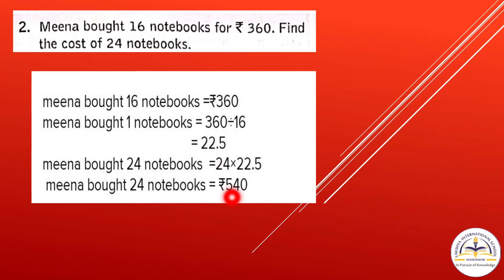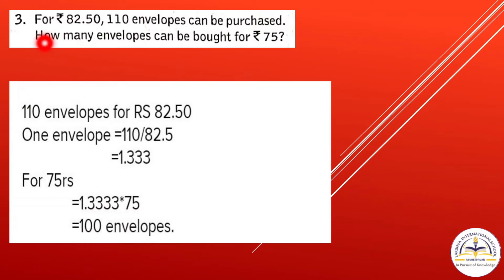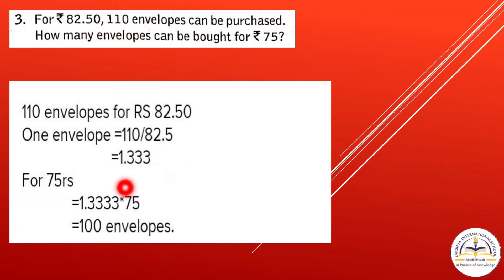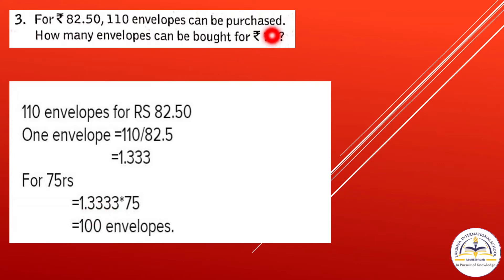Question 3: For rupees 82.50, 110 envelopes can be purchased. How many envelopes can be bought for rupees 75? First find the number of envelopes per rupee: 110 divided by 82.5 equals 1.333 envelopes per rupee. Then multiply 1.333 by 75, which gives 100 envelopes.